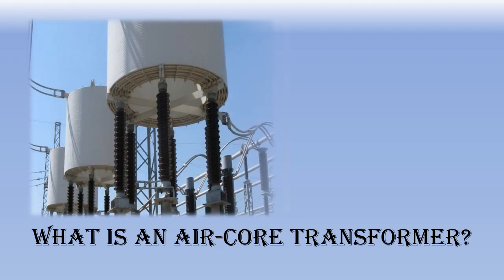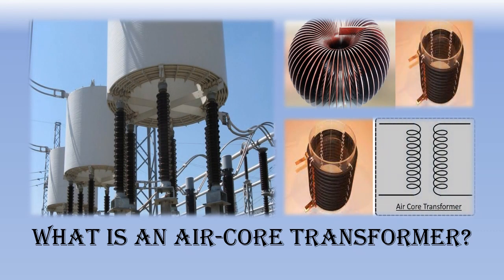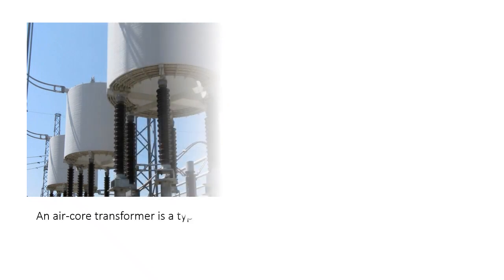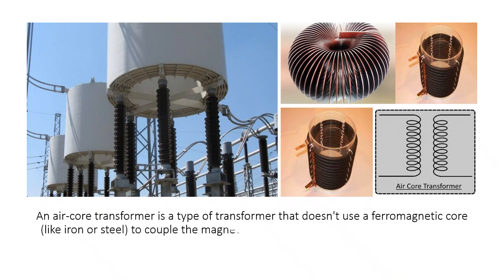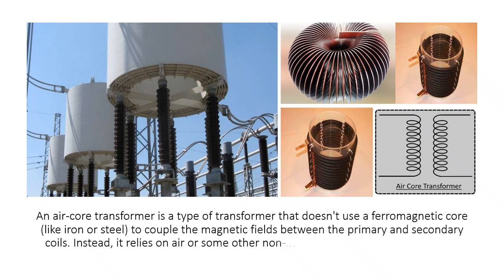What is an air core transformer? An air core transformer is a type of transformer that doesn't use a ferromagnetic core, like iron or steel, to couple the magnetic fields between the primary and secondary coils. Instead, it relies on air or some other non-magnetic material to separate and support the coils.